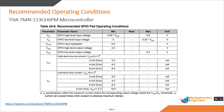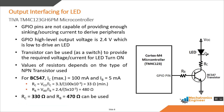As noted, GPIO pins provide very little sinking and sourcing current — not enough to drive some peripherals. Even the high-level output voltage of 2.4V is not sufficient to turn on an LED. Therefore, we need a buffer circuit that can successfully interface the LED with the microcontroller pins.